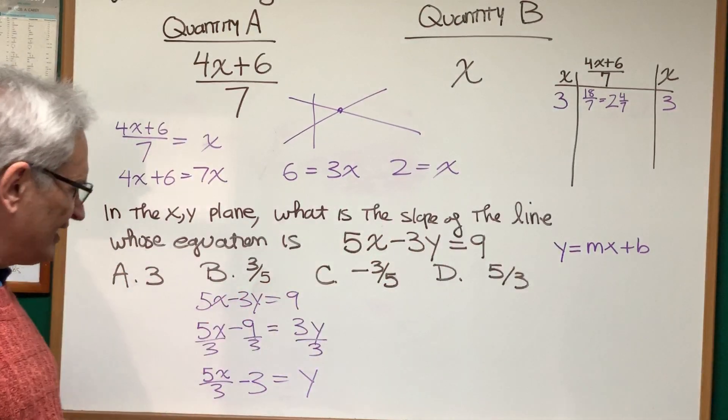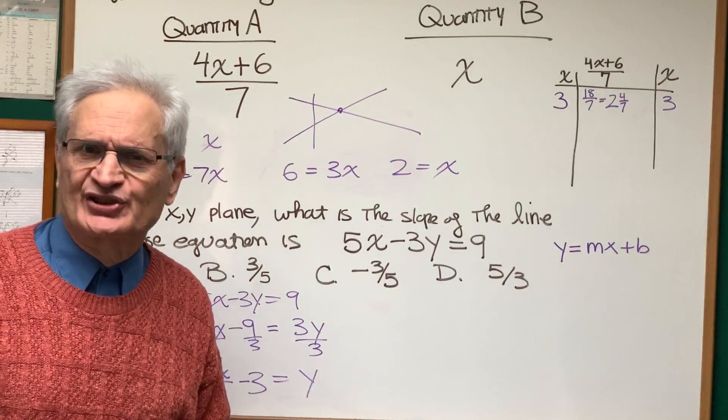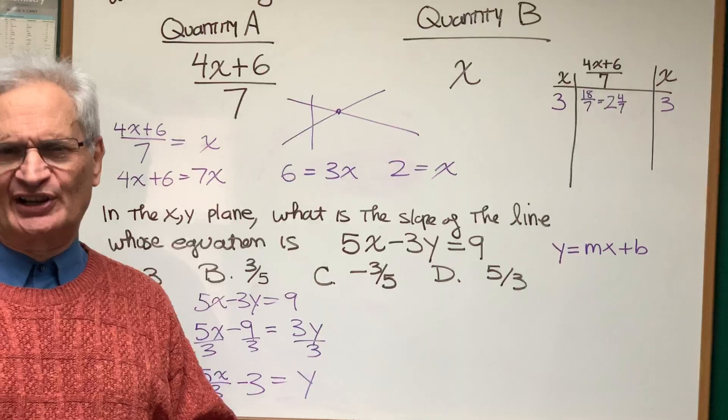And does that appear in our choice of answers here? Yes, it's choice D. And just as a matter of fact here, the negative 3 is the y-intercept. That's where it intercepts the y-axis. So there we are, a little bit of a review of linear equations.